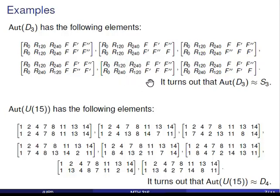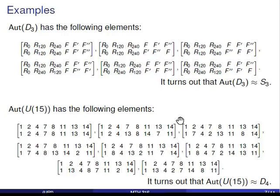Now if we were to compose every one of these automorphisms with every other one, we could fill out a Cayley table for the automorphism group. Though we won't go through all the details here, doing so would show us that the automorphism group of D3 has the same structure as S3 — Aut(D3) is isomorphic to the symmetric group of degree 3. Similarly, these eight automorphisms of U(15) turn out to be a group with the same structure as D4 — that is, Aut(U(15)) is isomorphic to the symmetry group of a square.